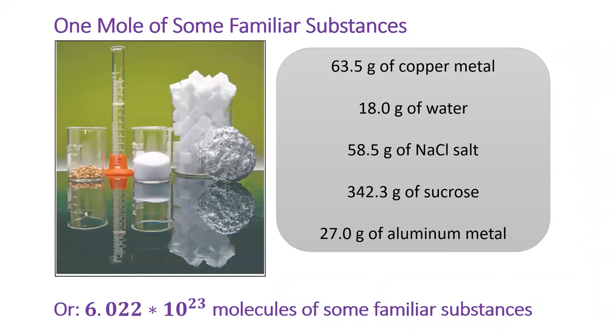This image shows one mole of some familiar substances: copper, water, table salt, sucrose, and aluminum. Each of these samples has a different mass, but they all contain the same number of entities, which is 602 billion trillion, or one mole. You can see that the amount of this substance is much easier to work with and might be close to something we'd use on the laboratory scale.